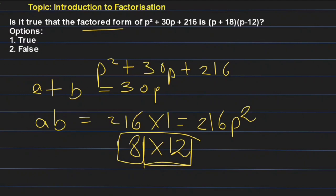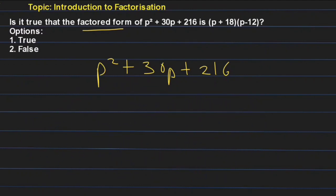So students, we have 18 and 12 as the two numbers. So you will get p² plus... you can split the middle term. This is called middle term splitting.